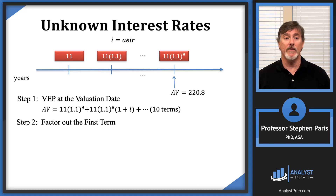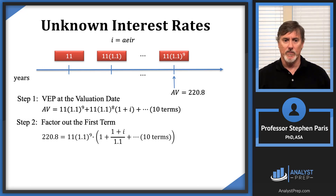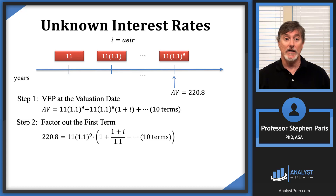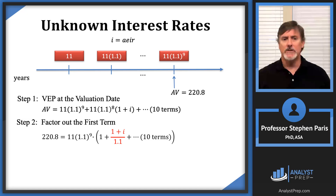Step two is to factor out the first term — 11 times 1.1 to the ninth — from the right-hand side, and I plug in 220.8 for the accumulated value on the left. Inside the parentheses I get a 1, and then to recover the second term I need to multiply by (1+i) divided by 1.1. So the common ratio in red is (1+i) / 1.1.